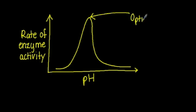The graph for the effect of pH on enzyme activity is very similar to that of temperature although you might notice a more symmetrical decrease in rate of reaction either side of the optimum pH.